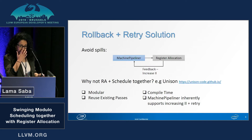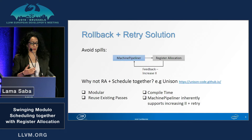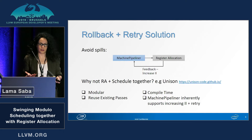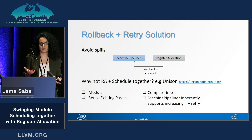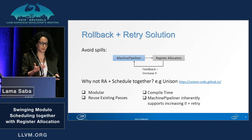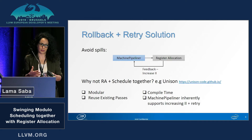Since we want to avoid spills in our target, if we do encounter spills in the register allocator, we would like to go back to the machine pipeliner and try to schedule with an increased II.